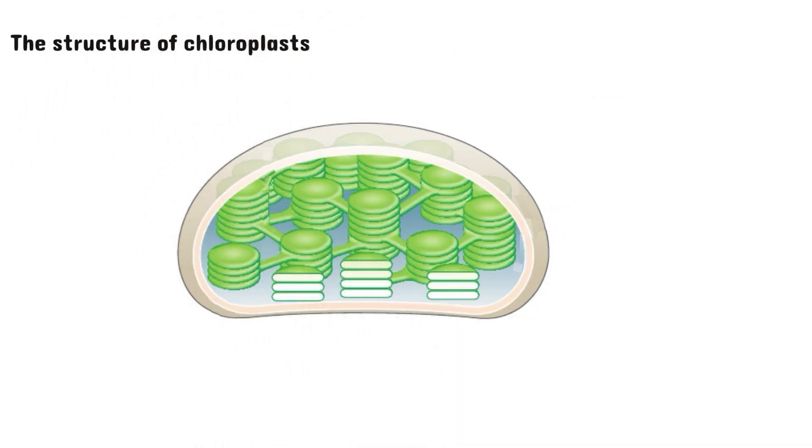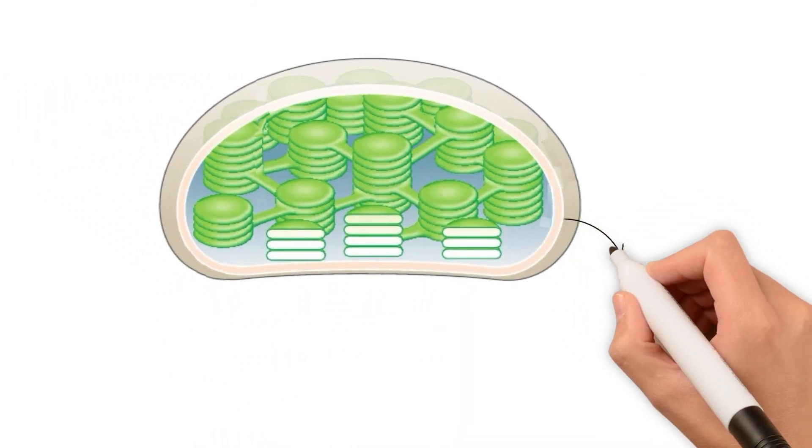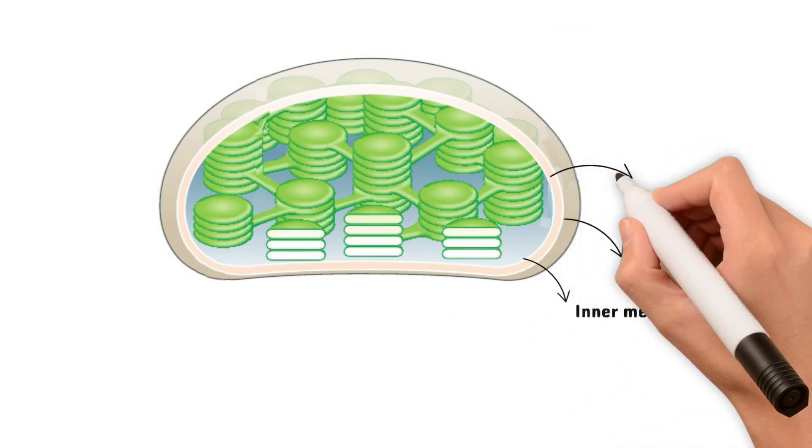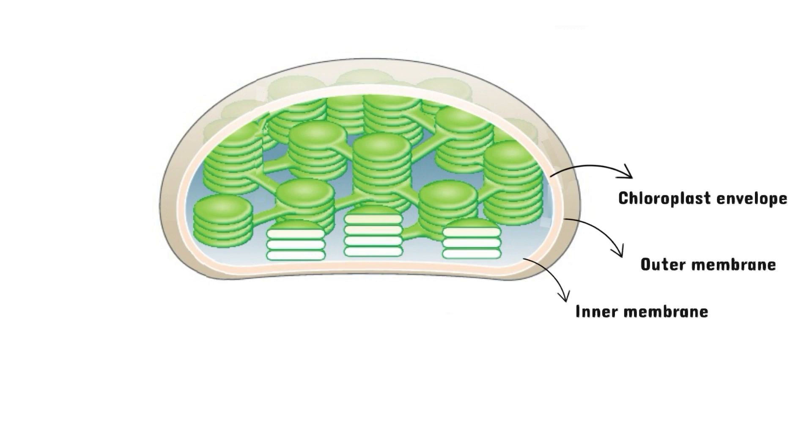Let's move on to the structure of chloroplasts. Firstly, every chloroplast is surrounded by an outer membrane and an inner membrane. The space in between the membranes is known as the chloroplast envelope. Inside we have many structures that look like stacks of discs.